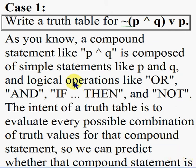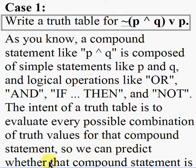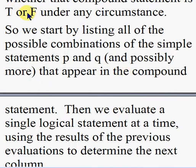Let's look at two examples. Case one: write a truth table for NOT the quantity P AND Q, OR P. As you know, a compound statement like P AND Q is composed of simple statements like P and Q and logical operations like OR, IF-THEN, and NOT. The intent of a truth table is to evaluate every possible combination of truth values for that compound statement, so we can predict whether it is true or false under any circumstance.